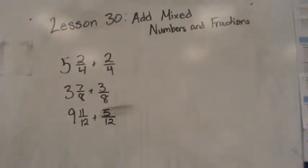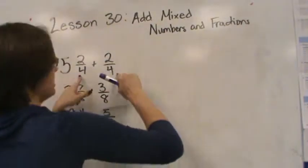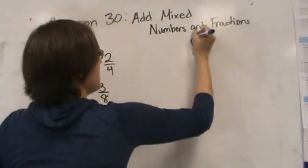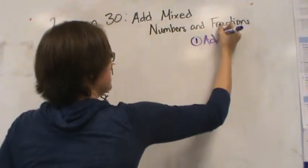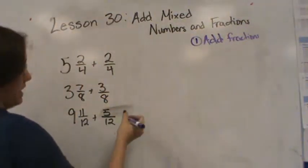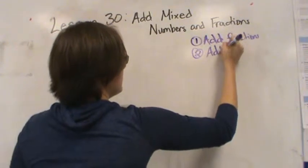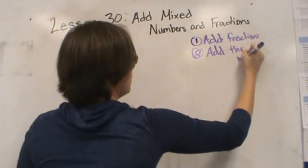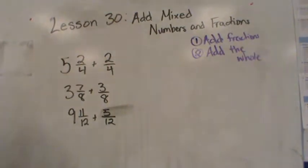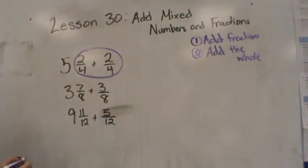Lesson 30 — we are going to be adding mixed numbers and fractions. When we have mixed numbers and fractions, the first thing we want to do is look at the fractions. We're going to first add the fractions, assuming the denominator is the same. Then the second thing we want to do is add the whole. So we're really just adding the parts and then adding the whole.